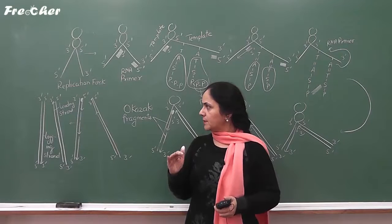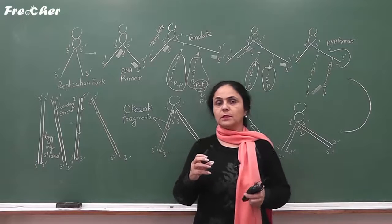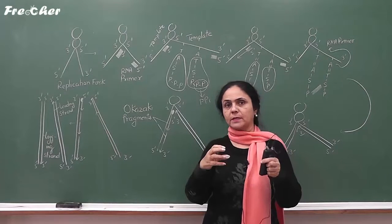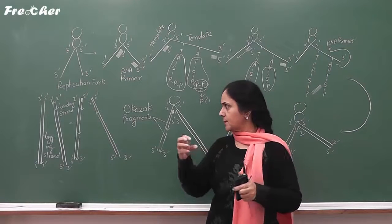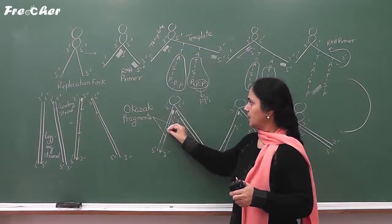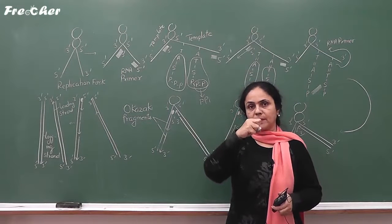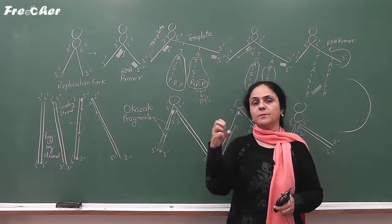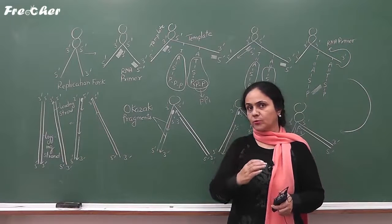Proof reading is performed by DNA polymerase 1. During polymerization of DNA nucleotides, very often wrong nitrogen bases get inserted. DNA polymerase 1 removes the wrong nitrogen base from the new DNA strand and inserts the correct nitrogen base. This process is known as proof reading.